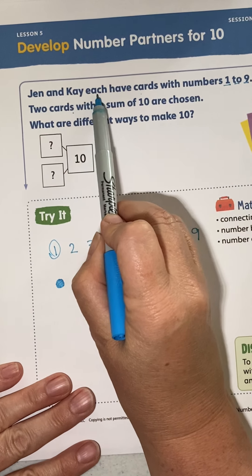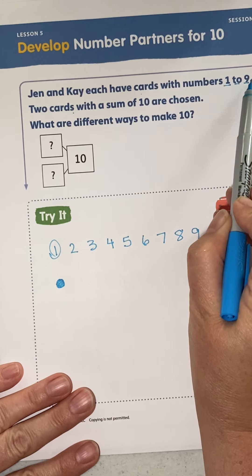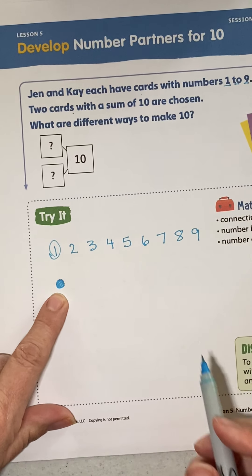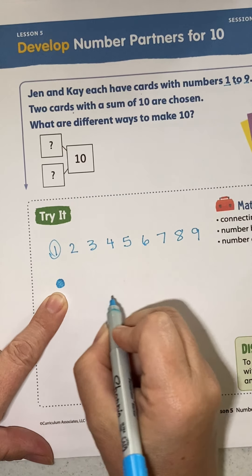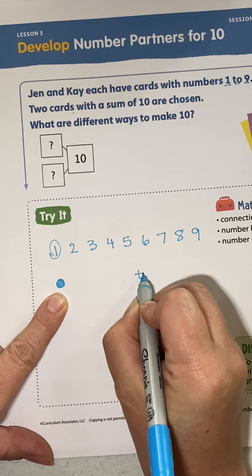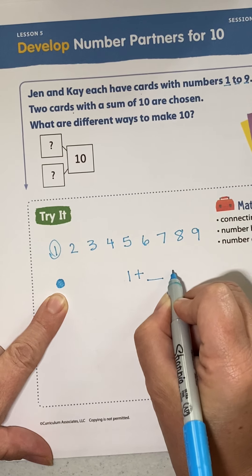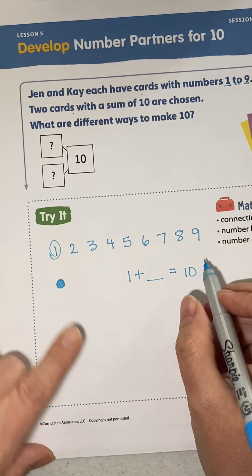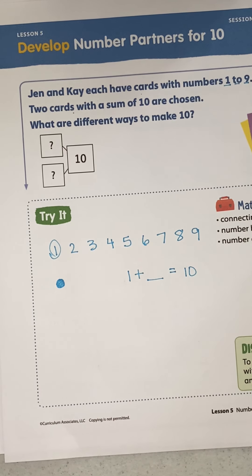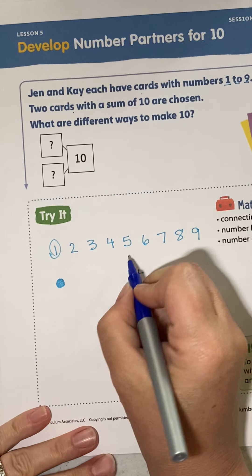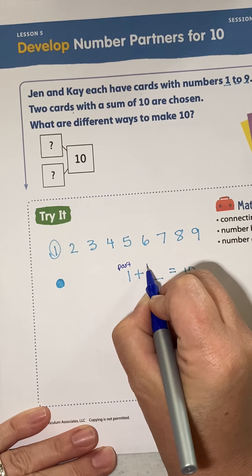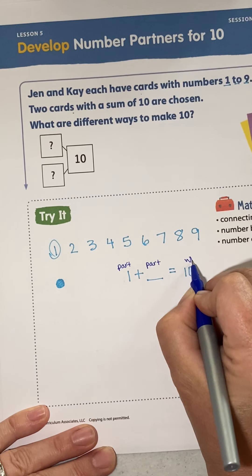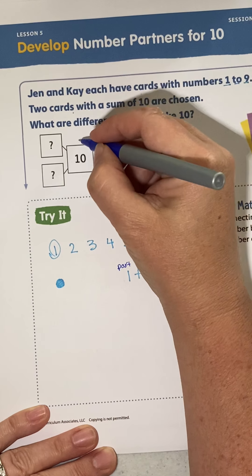It says Jen and Kay each have cards with the numbers 1 to 9 on them. Two cards with a sum of 10 are chosen. So if I have 1, okay, 1 plus what will give me the sum of 10? That means 10 is my whole, 1 is a part, this is a part, and 10 is the whole or the total. Just like we have up here, we have this as our whole, a part and a part.